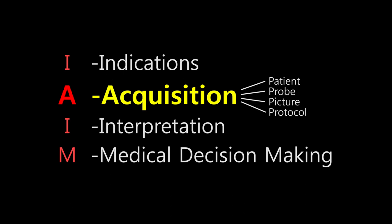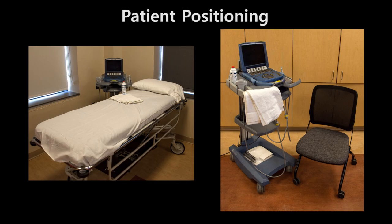Let's move on to A for Acquisition. The proper way to acquire the image can be remembered using the four P's: patient, probe, picture, and protocol. Aside from the FAST scan, which is done in the time-critical setting of trauma patients, take a moment to situate your patient for the best positioning for the scan. For many scans such as echocardiography, this may be with the patient supine, or seated as for an ultrasound of the shoulder. Gown and drape the patient appropriately and have easy access to towels for cleaning up after the scan.